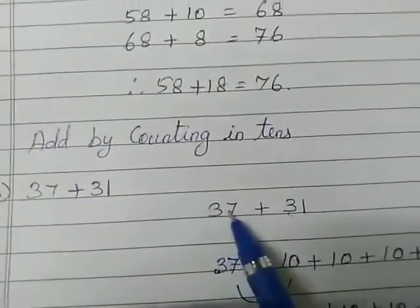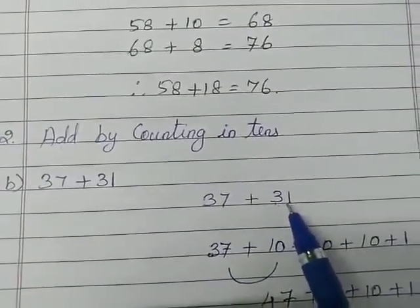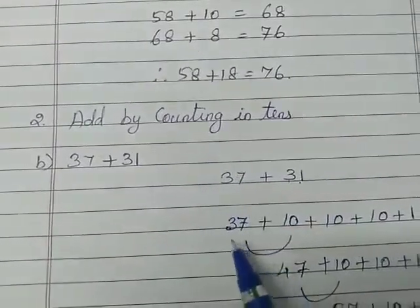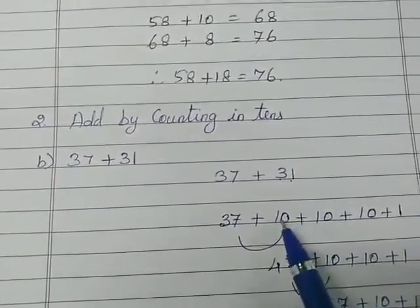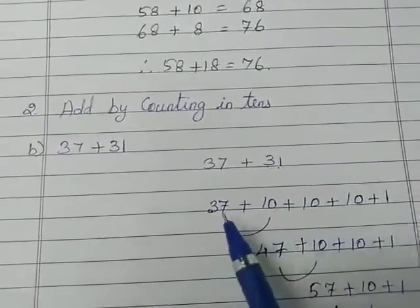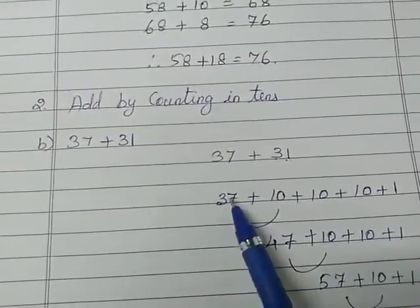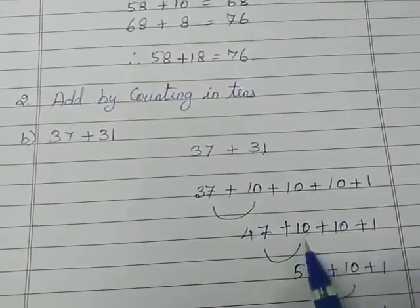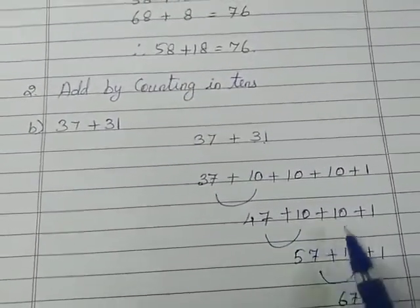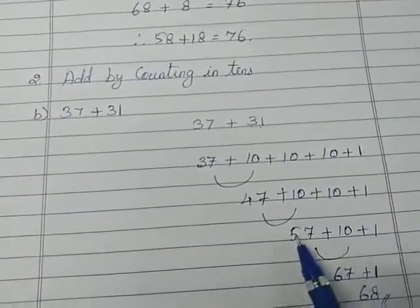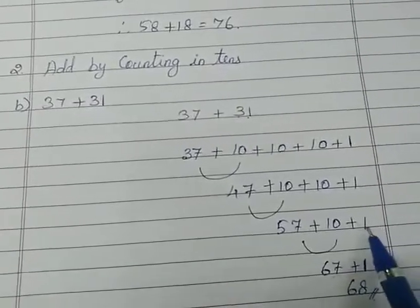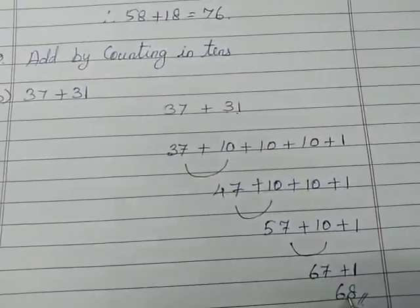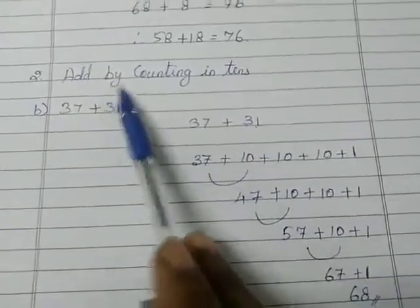Again, for 37 plus 31: you just see which number is placed in the 10s value. 3 is placed in the 10s value, so bring the first number down, then add 3 tens — 10 plus 10 plus 10 — plus that 1. Next, add one by one: 37 plus 10 is 47. Then 47 plus 10 is 57, then 57 plus 10 is 67. Bring down the 1s value, and at last 67 plus 1 equals 68. This method is called add by counting in 10s.